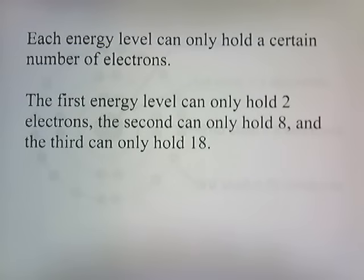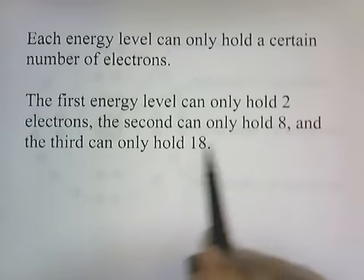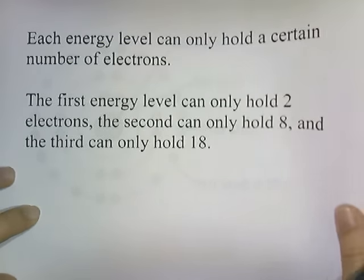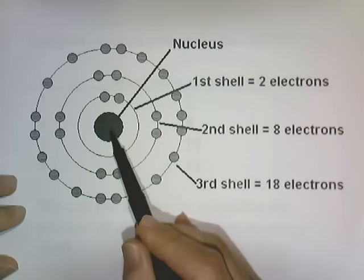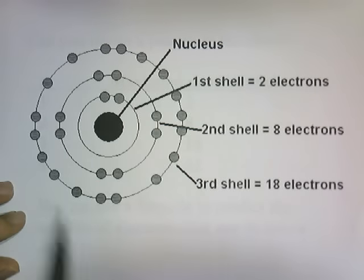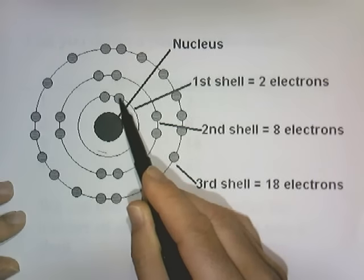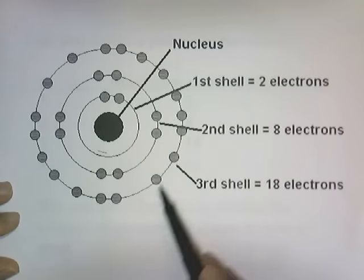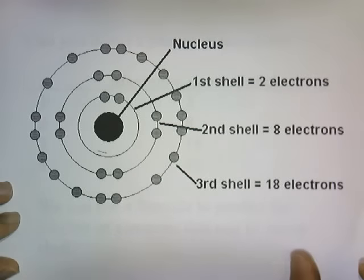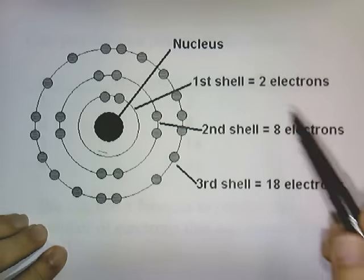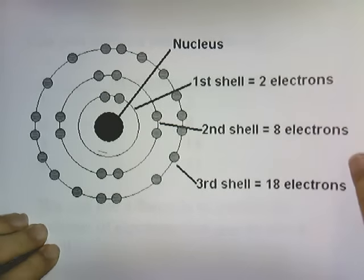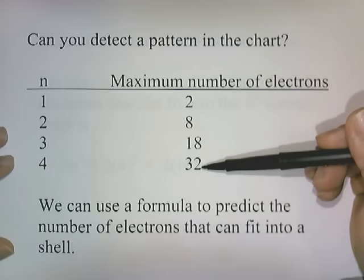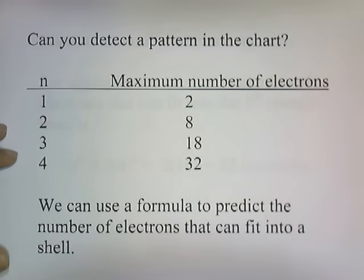Each energy level can only hold a certain number of electrons. The first energy level can hold 2 electrons, the second can hold 8, and the third can hold 18 electrons. Looking at a picture of the atom, in the first circle there are only 2 electrons, in the second circle there are 8 electrons, and in the outermost circle shown there are 18 electrons in the third energy level. So the pattern is: first energy level holds 2, second holds 8, third holds 18, fourth holds 32. As the energy level increases, we can fit more and more electrons in.